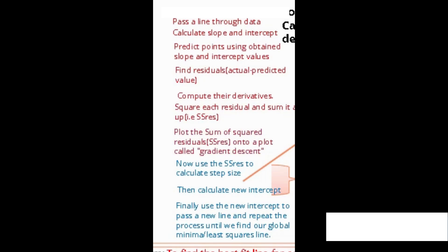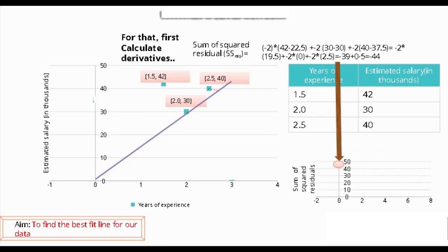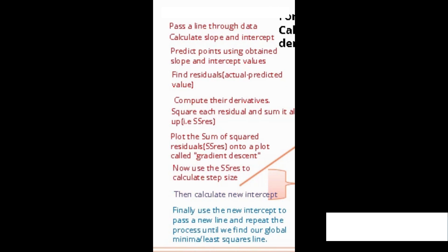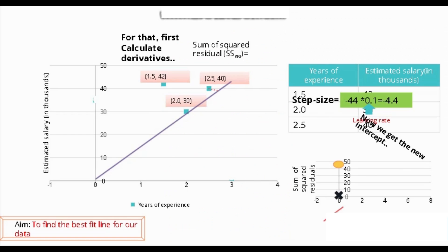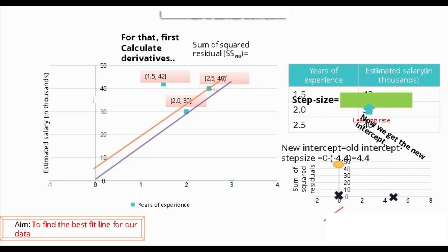Plotting our sum of squared residuals onto the gradient descent curve at negative 44 — where the x-axis is the intercept and the y-axis represents the sum of squared residuals — we now calculate the step size. Taking 0.1 as our learning rate, we calculate the new intercept by subtracting the old intercept (0) minus the step size (negative 4.4), and the result comes out to be 4.4 as our new intercept, which is higher than the previous one.